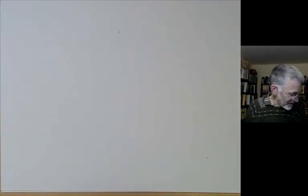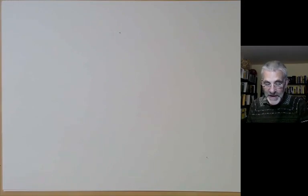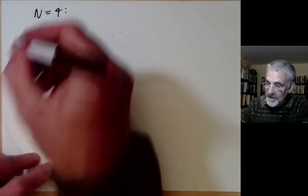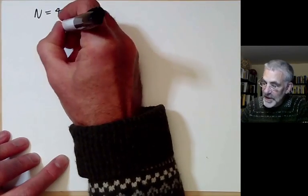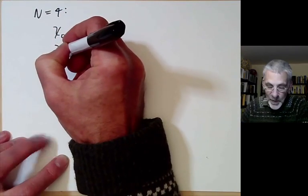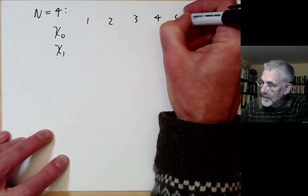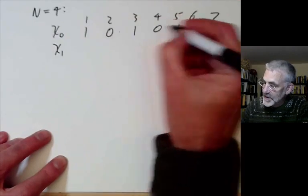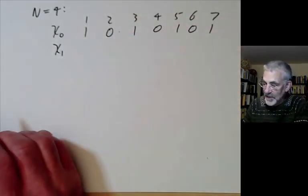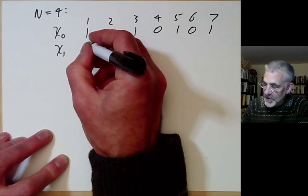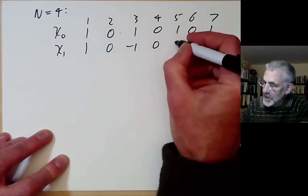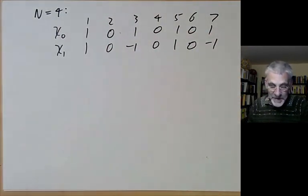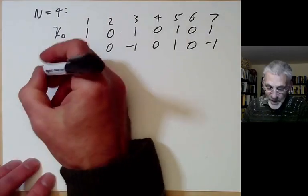In order to illustrate the proof, it's best to go through a couple of examples in detail. Let's first look at the simplest non-trivial example: N = 4. Here we have two Dirichlet characters, chi_0 and chi_1. Chi_0 is 0 for even numbers and 1 for odd numbers. Chi_1 oscillates: it's 1 for things that are 1 mod 4 and −1 for things that are 3 mod 4.